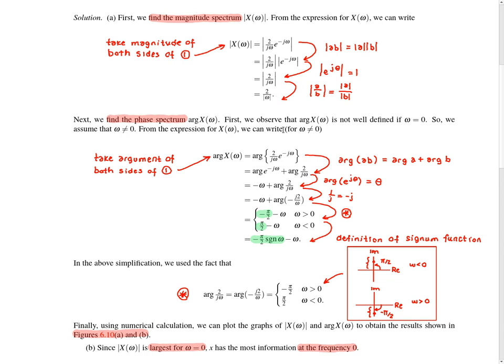In part A, we're asked to find the magnitude and phase spectra of little x. To find the magnitude spectrum, we simply take the magnitude of big X. Using the given expression for big X, we apply the fact that the magnitude of a product equals the product of the magnitudes. The magnitude of e to the minus j omega is simply equal to 1, since this is a complex number in polar form with magnitude 1. Then applying the fact that the magnitude of a quotient equals the quotient of the magnitudes, we arrive at the expression for the magnitude spectrum.